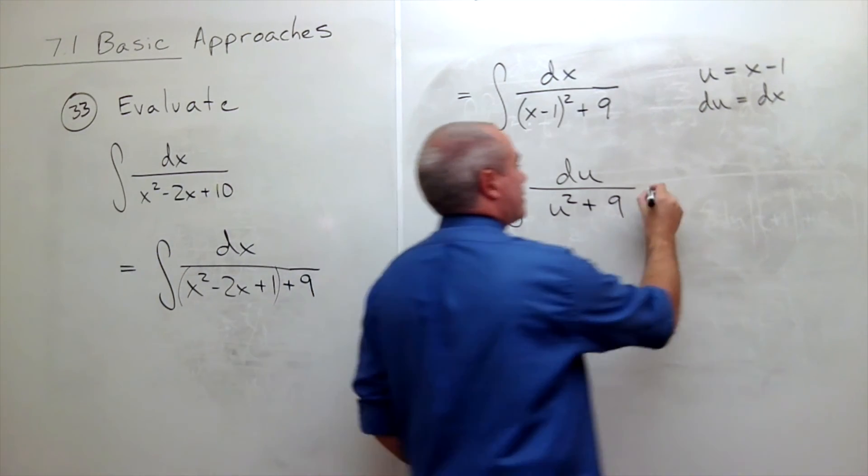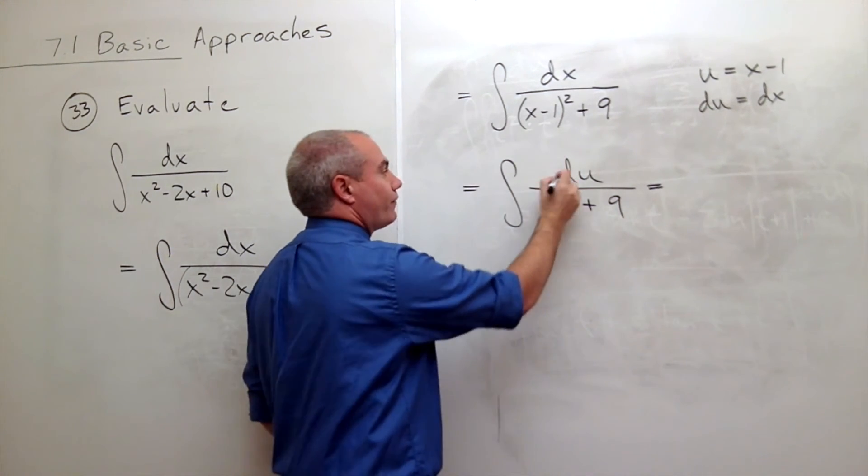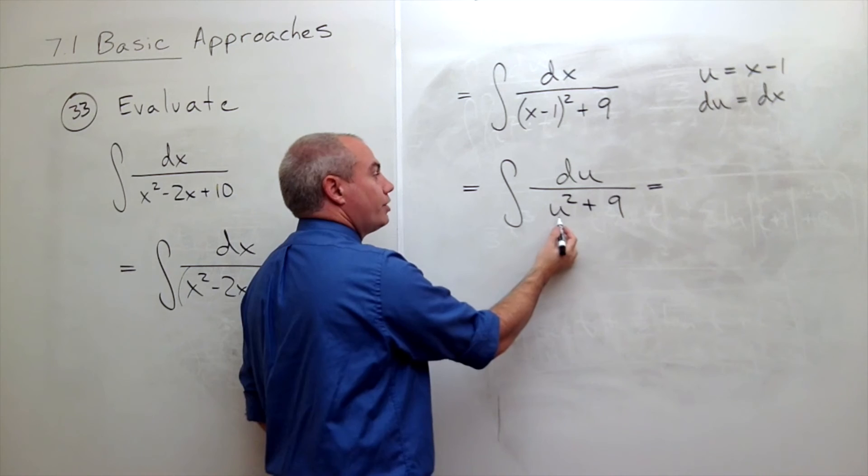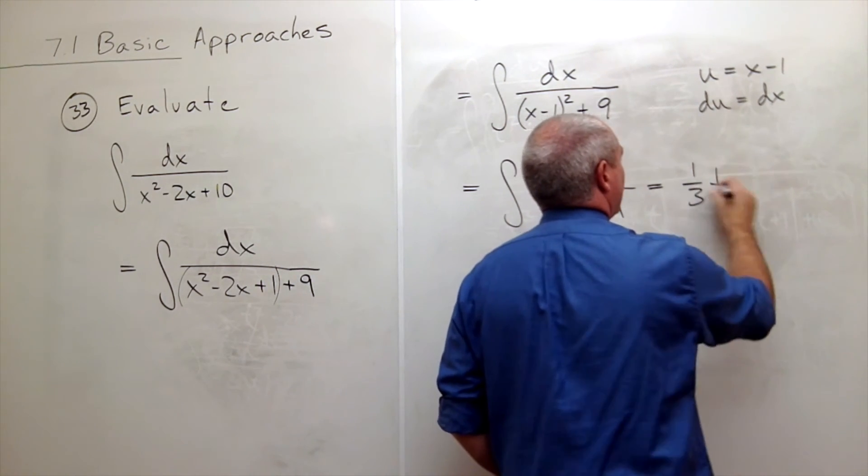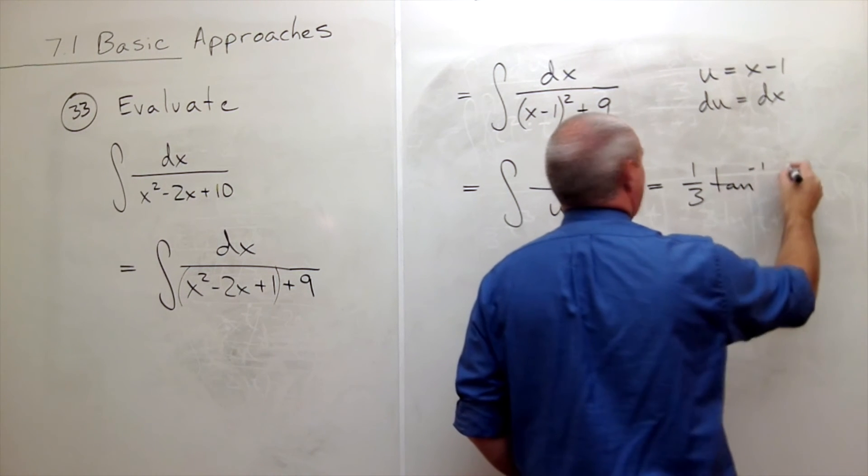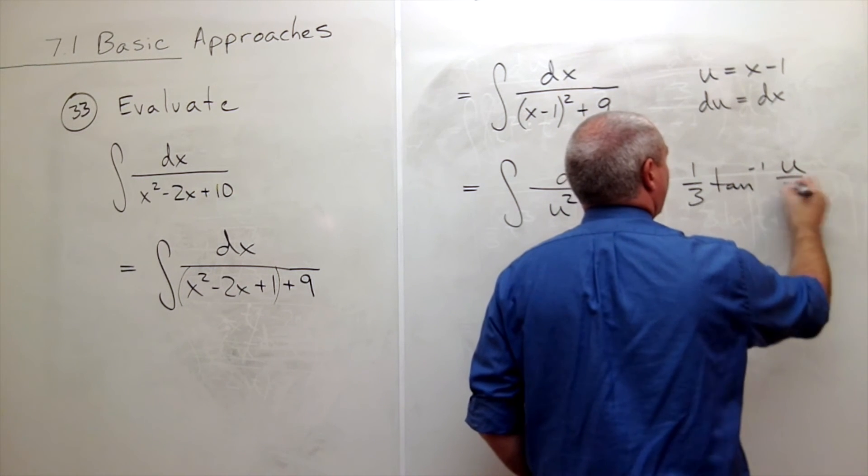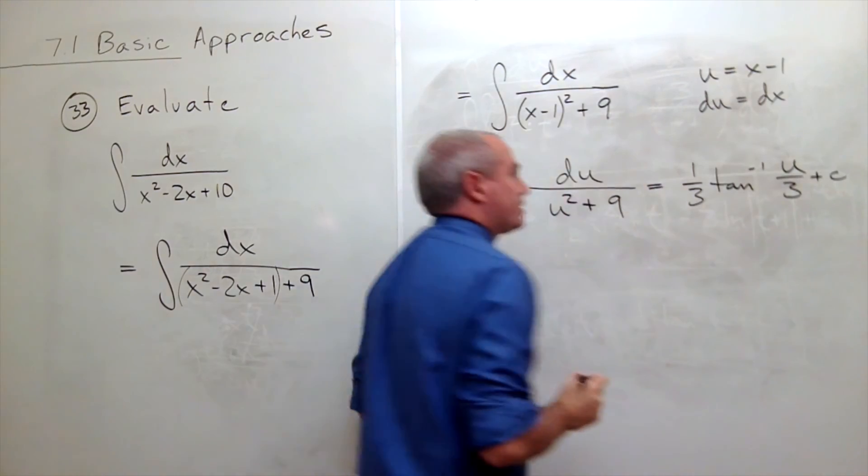and I could say that the anti-derivative of du over u squared plus 9 would be 1 third tan inverse of u over 3 plus a constant.